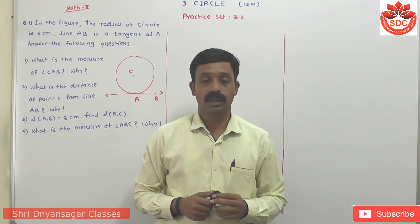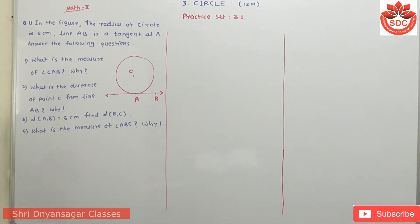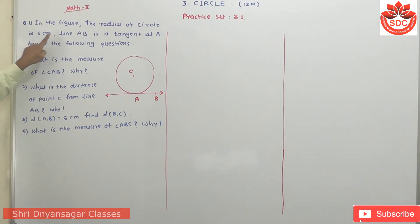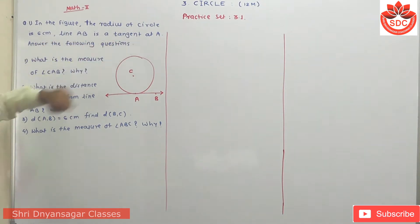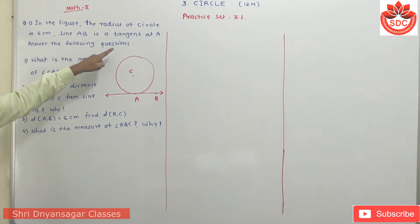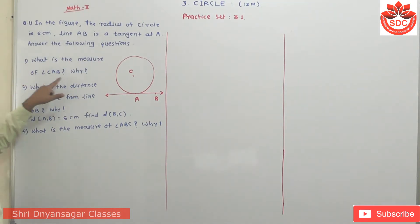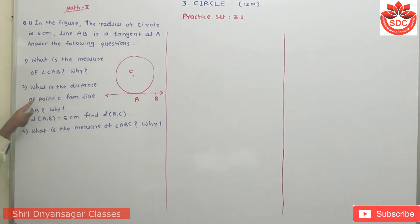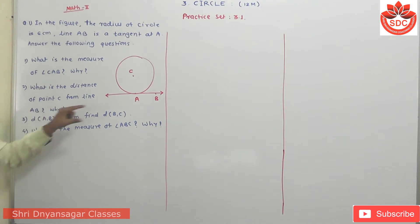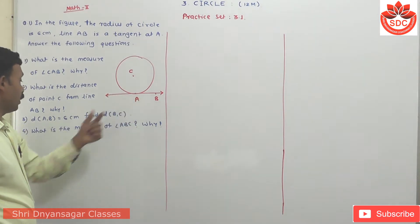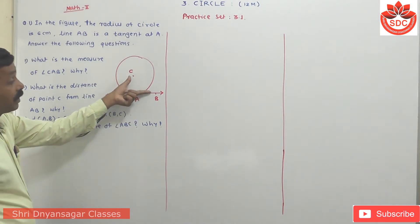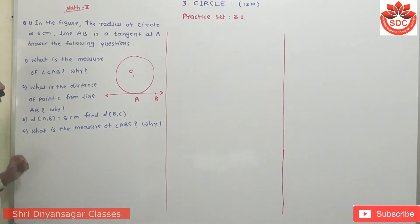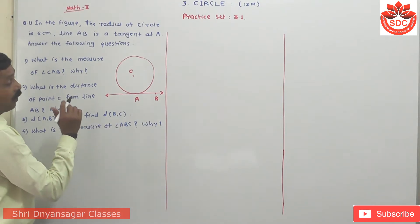The first question: in the figure, the radius of the circle is 6 cm and line AB is tangent at point A. Answer the following questions. First, what is the measure of angle CAB? Second, what is the distance of point C from the line AB? Third, find the distance of BC. Fourth, what is the measure of angle ABC?